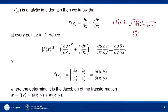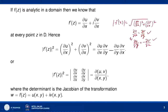So ux = vy and uy = -vx. Making use of these Cauchy-Riemann equations, we can write ux² as ux·vy and vx² as vx·(-uy), so |f'(z)|² = ux·vy - uy·vx, which can be written as the determinant |ux uy; vx vy|. This determinant is the Jacobian of the transformation w = f(z) = u(x,y) + iv(x,y).